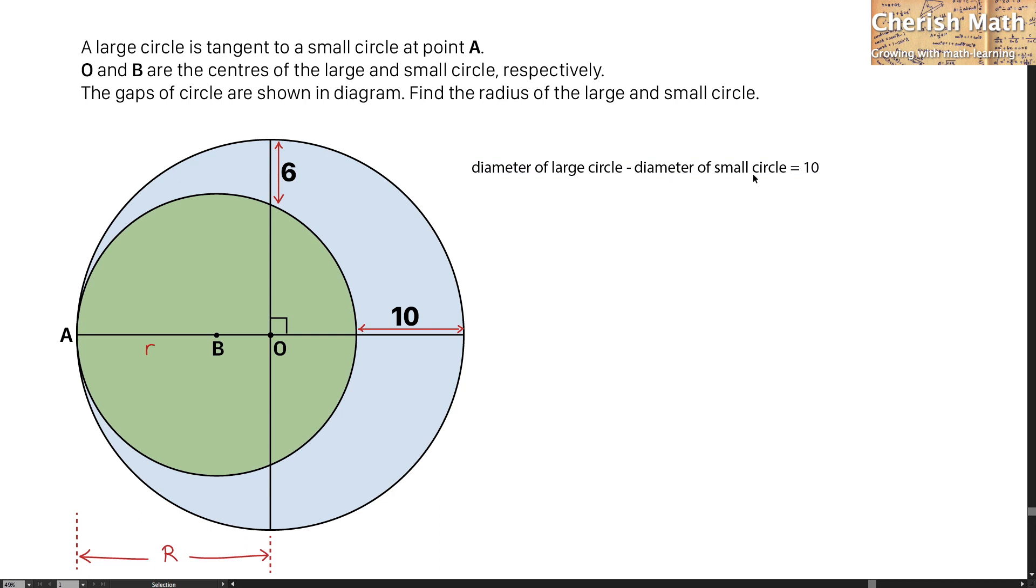Now I'm going to represent this in letters. That is 2 times capital R minus 2r equals 10. When I simplify this, I'm going to get capital R minus r equals 5. Rearrange to make the capital R as the subject, and this is what I get.